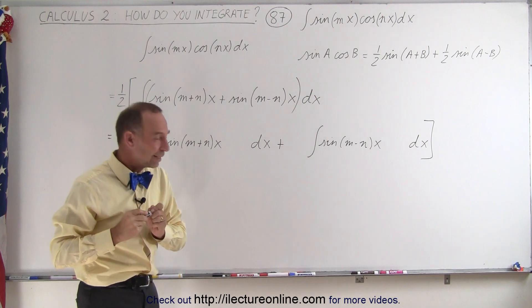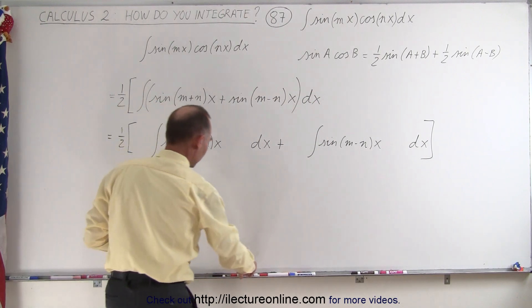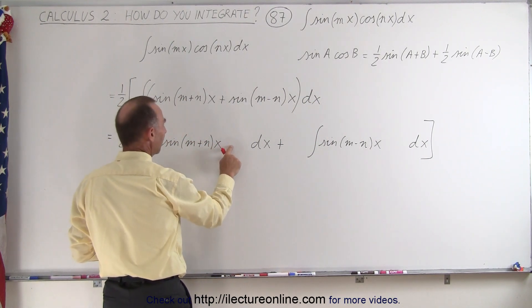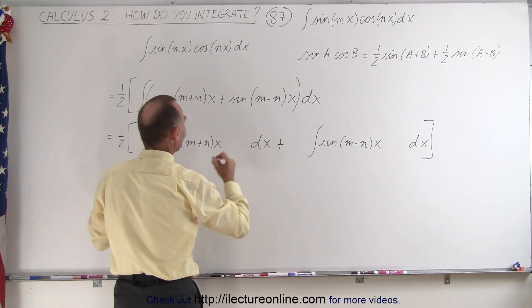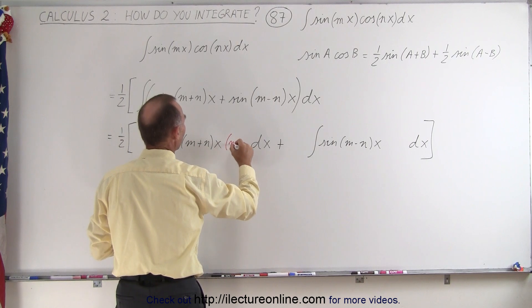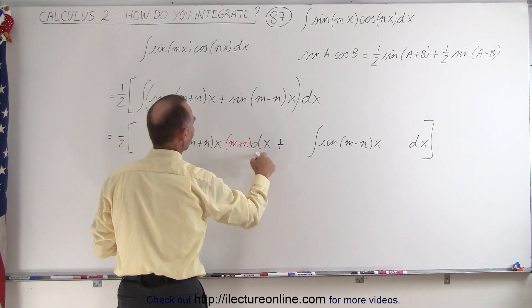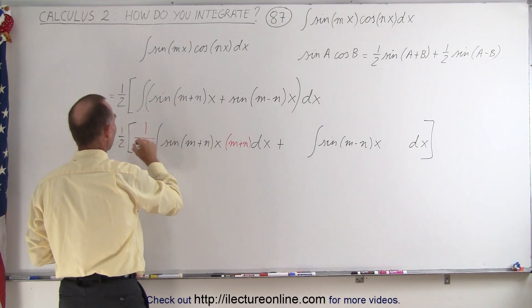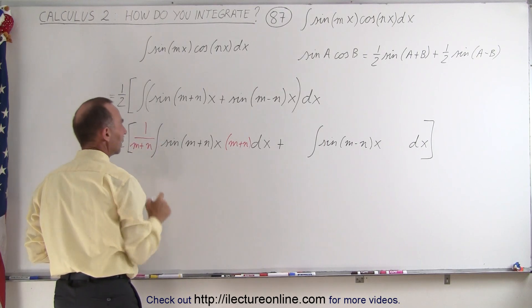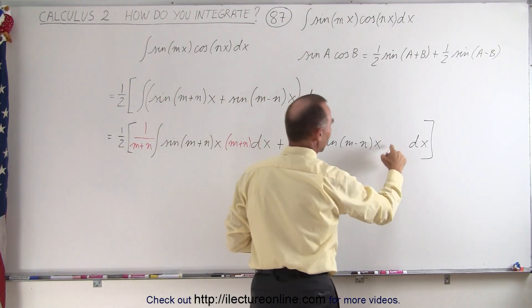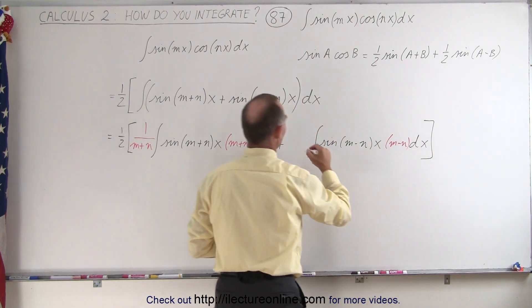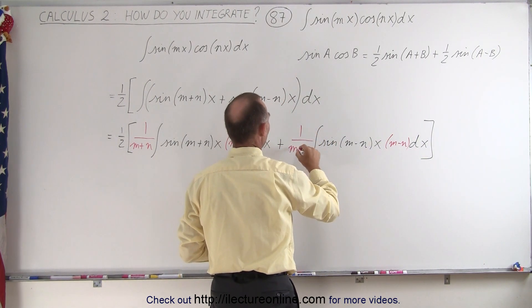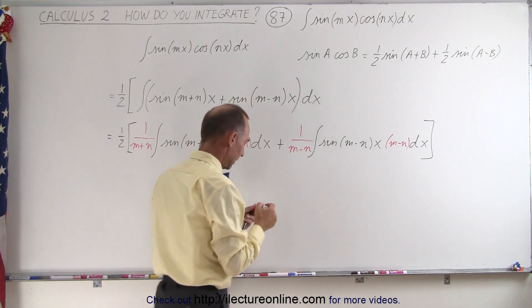Notice why did I leave some room? I did that because I'm going to need an m plus n here. If the angle is m plus n times x, my differential will be m plus n times dx. I need an m plus n times dx, which means I also have to divide by m plus n. And here I'm going to need a m minus n times dx, so I have to divide also by m minus n.